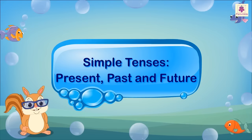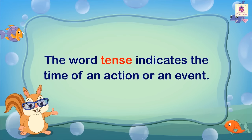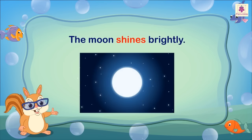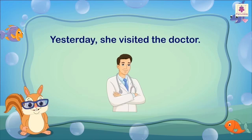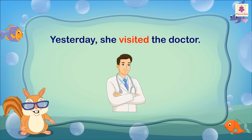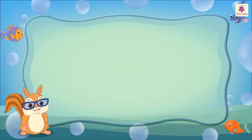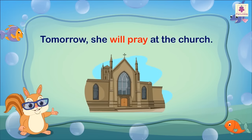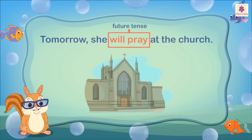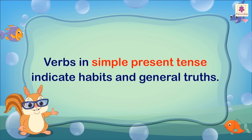Simple tenses: present, past, and future. The word 'tense' indicates the time of an action or event. For example, 'The moon shines brightly' — the verb 'shines' indicates an action in the present. 'Yesterday she visited the doctor' — the verb 'visited' indicates an action in the past. 'Tomorrow she will pray at the church' — the verb 'will pray' indicates an action in the future.